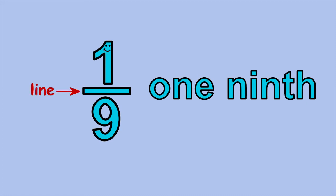I've got a line through my middle with a number called the numerator above the line and a number called the denominator below the line.